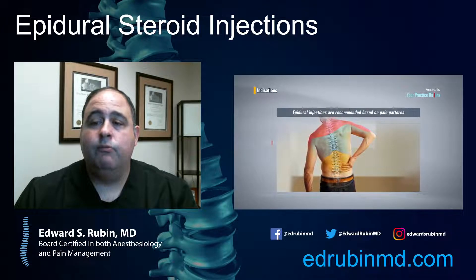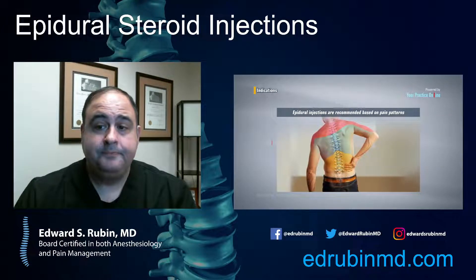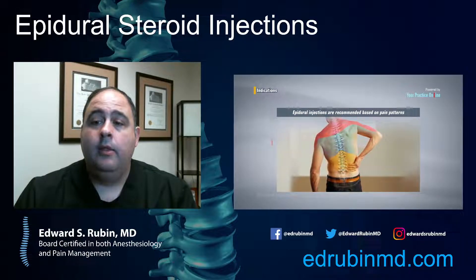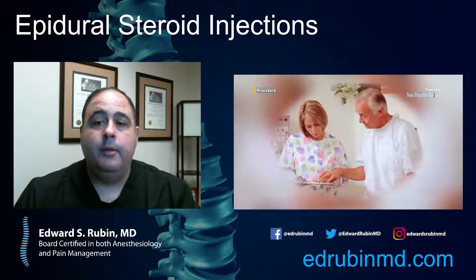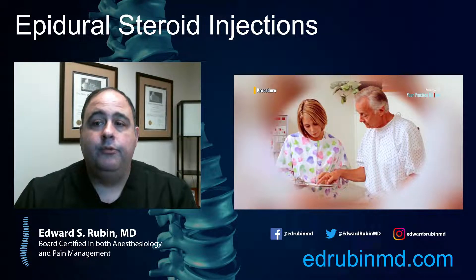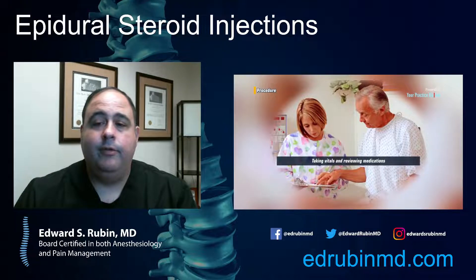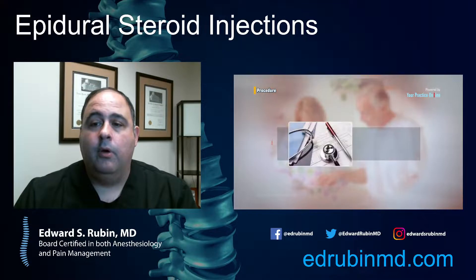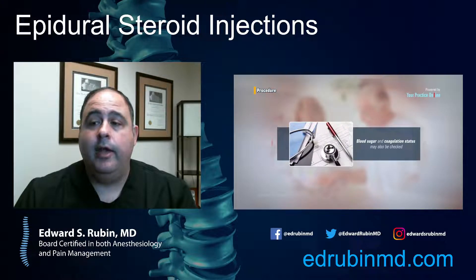Each region of the body has a different pattern of pain. The nerves in your neck go down the arm, the nerves in the mid-back wrap around to the front, and in the lower back those nerves go down the leg. The most common is sciatica, so this is the treatment for low back pain going down the leg coming from a degenerative disc.